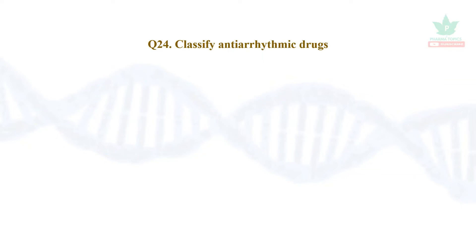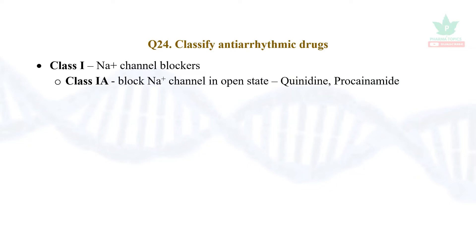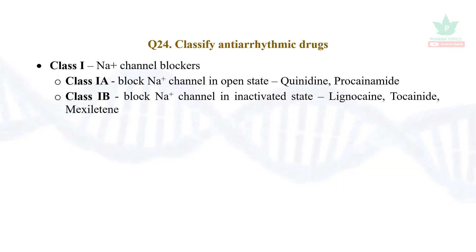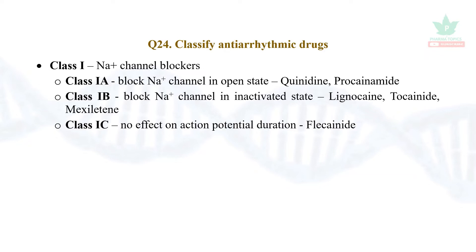We are going to classify anti-arrhythmic drugs. There are five classes. Class 1 is sodium channel blockers. Class 1a blocks sodium channels in the open state — that is quinidine and procainamide. Class 1b drugs block sodium channels in the inactivated state — lidocaine, tocainide, and mexiletine.